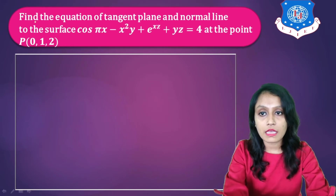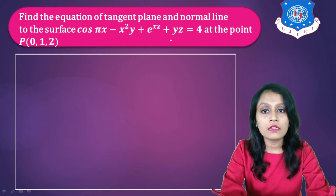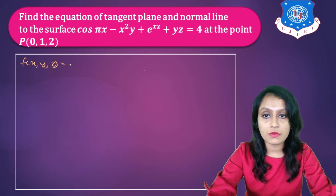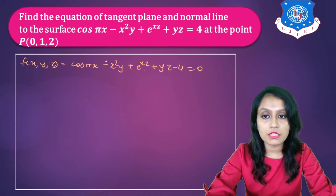Let's begin with the first example. Find the equation of tangent plane and normal line to the surface cos(πx) − x²y + e^(xz) + yz = 4 at the point (0, 1, 2). So F(x, y, z) = cos(πx) − x²y + e^(xz) + yz − 4 = 0.